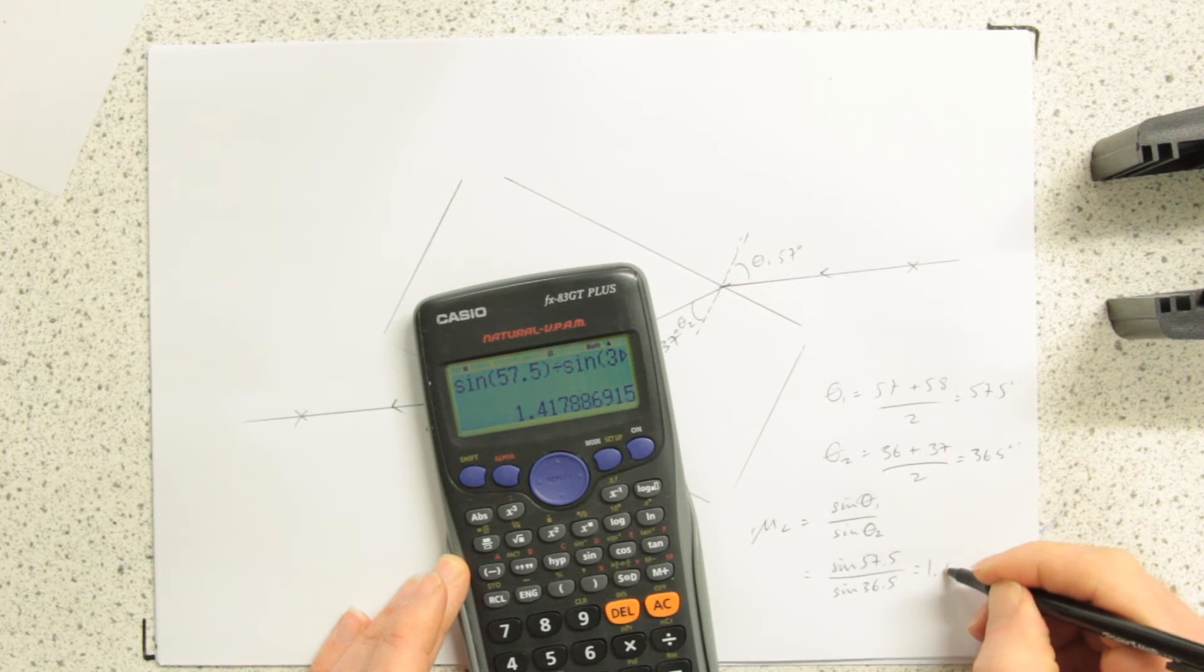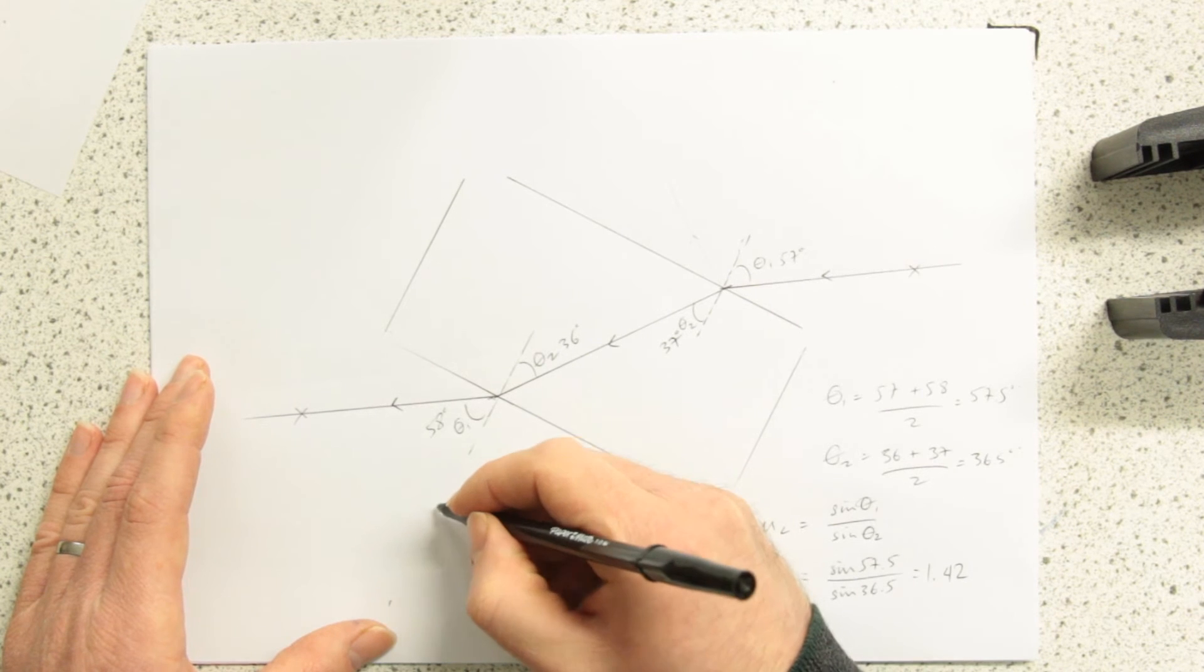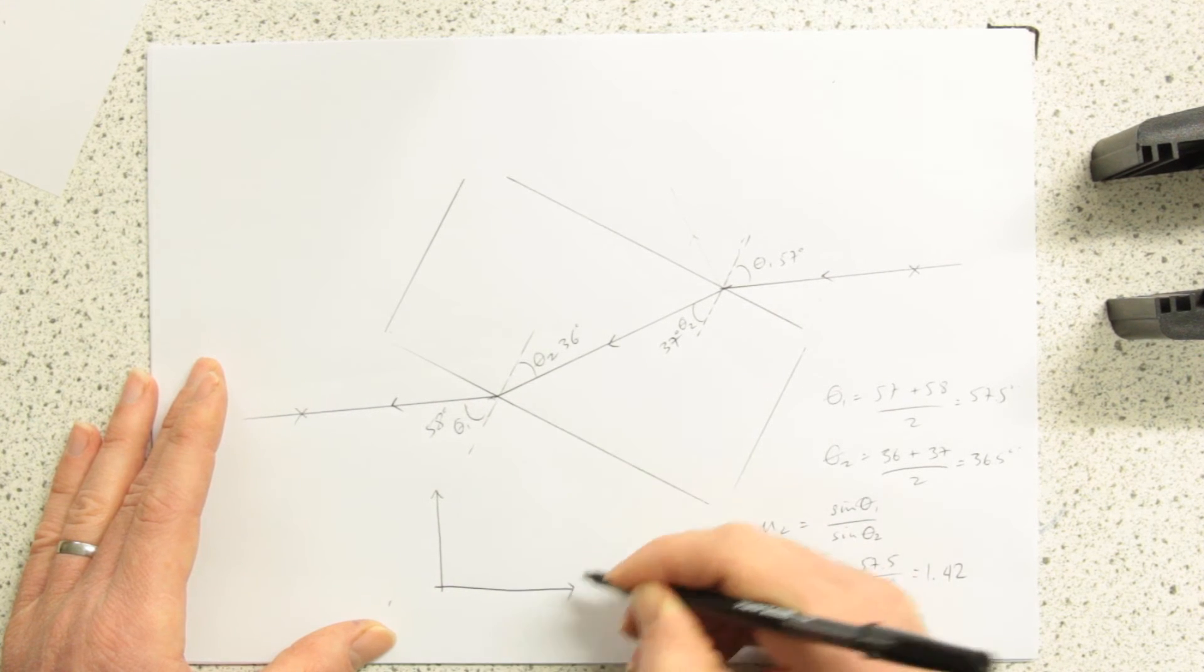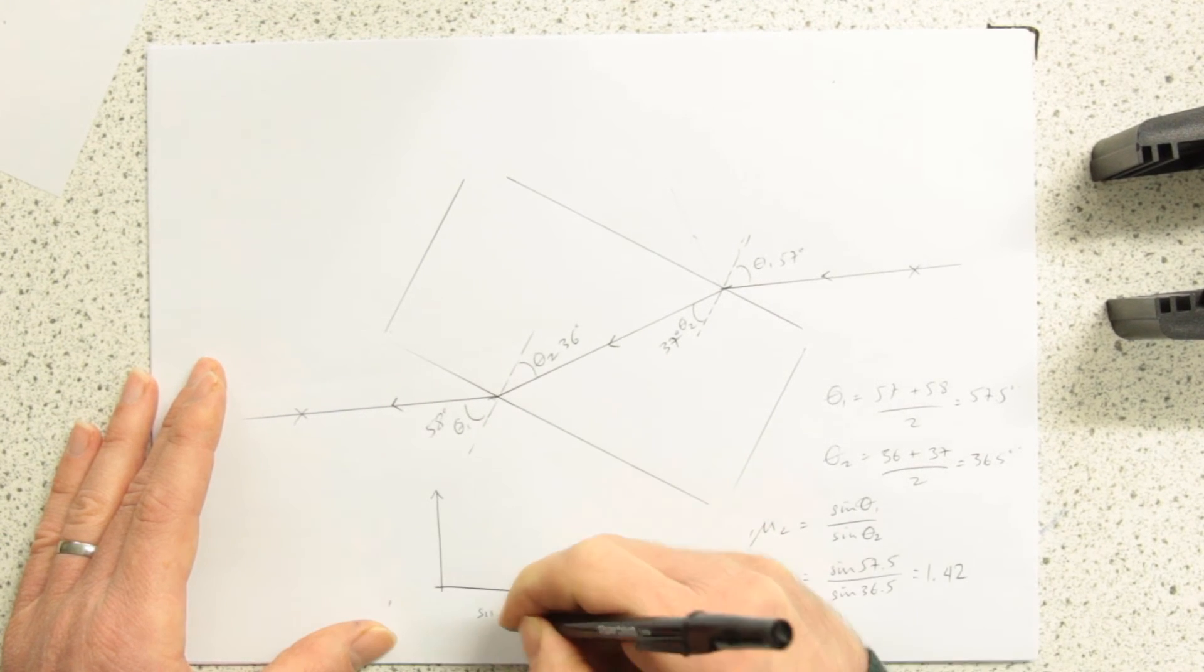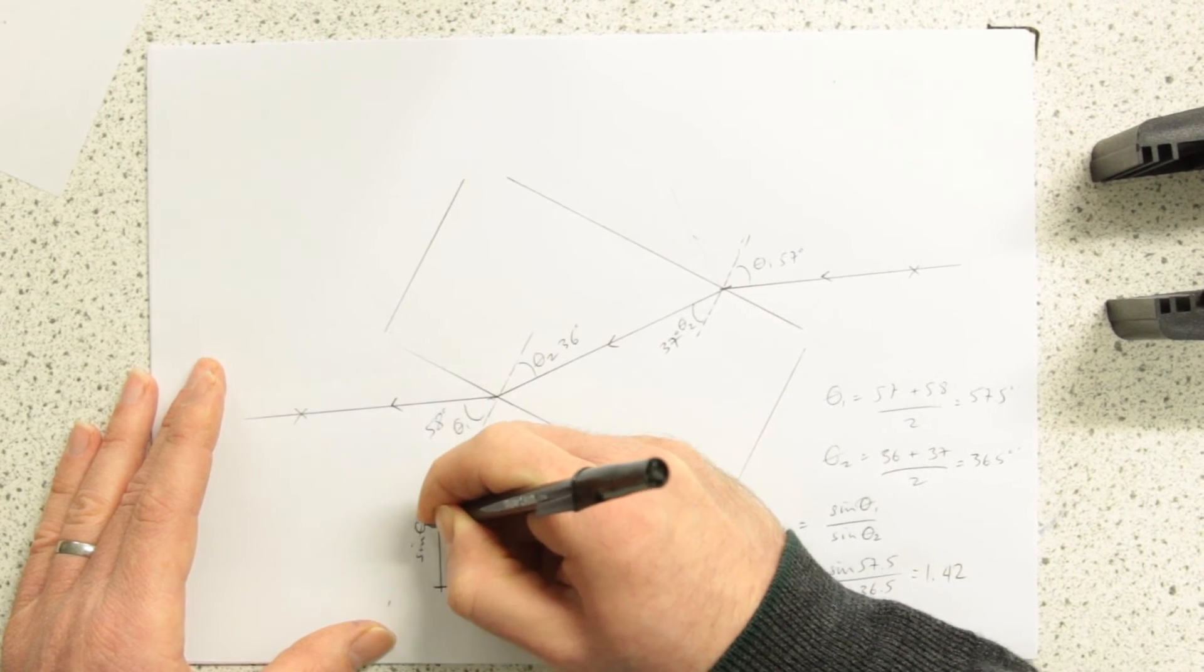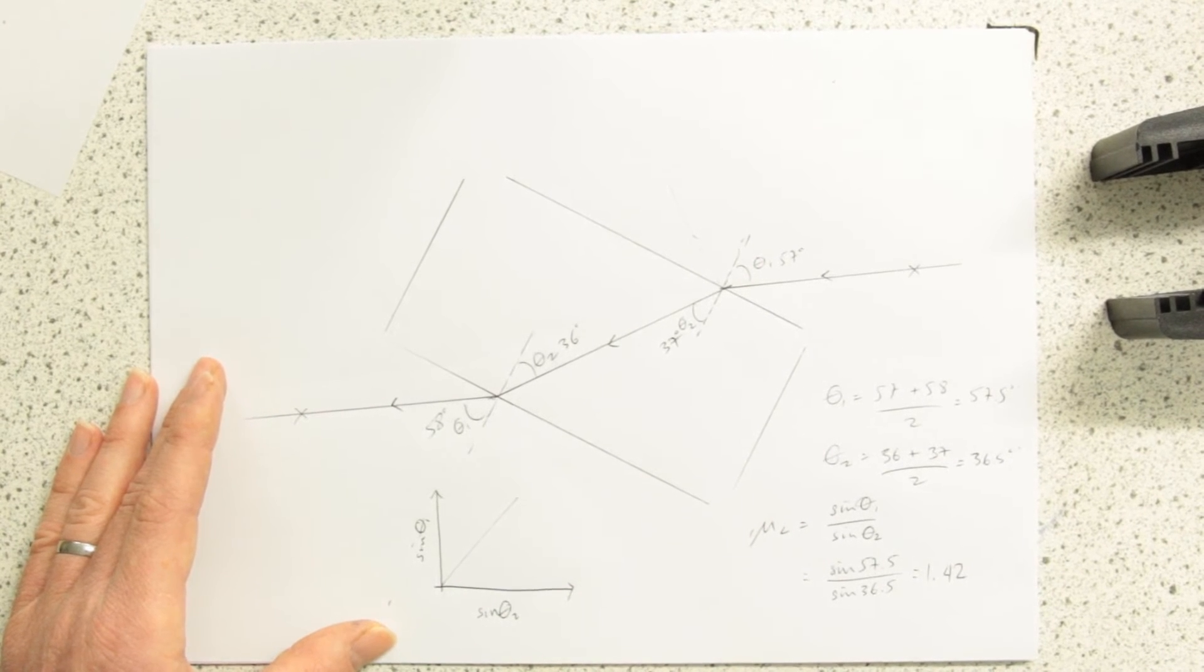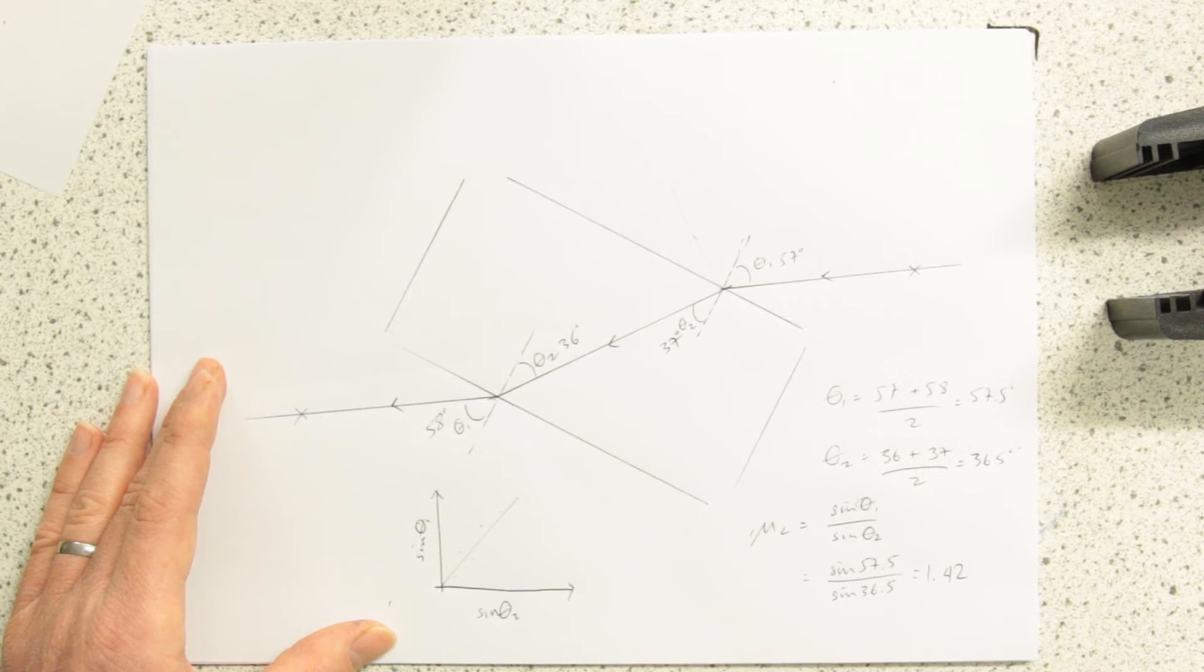This time 1.42, but what I would expect A-level students to do is actually take a range of i's and r's or angle 1's and plot sine i over sine r or sine 1 over sine 2. You should get a straight line, obviously, depending on the accuracy of your results and the reliability of your results.